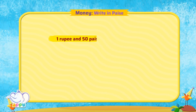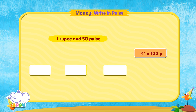Write 1 rupee and 50 paise in paise. We know 1 rupee equals 100 paise. So 1 rupee can be written as 100 paise, and 50 paise as 50 paise itself.